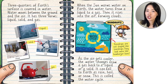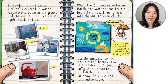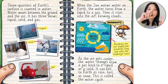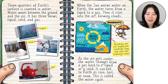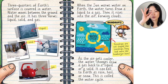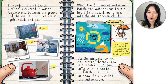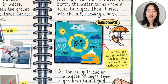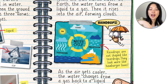Think about when you're boiling water — it can float up, it leaves the ground and turns into a gas. When the sun warms water on Earth, the water turns from a liquid to a gas, then it rises into the air forming clouds. As the water gets cooler, the water changes from a gas back to liquid or a solid. It can fall to Earth as rain, hail, or snow. This is called the water cycle. So looking at our image: the ocean evaporates and turns into a cloud, then precipitation — water, hail, or snow — comes back to the ground. It moves around in a circle.